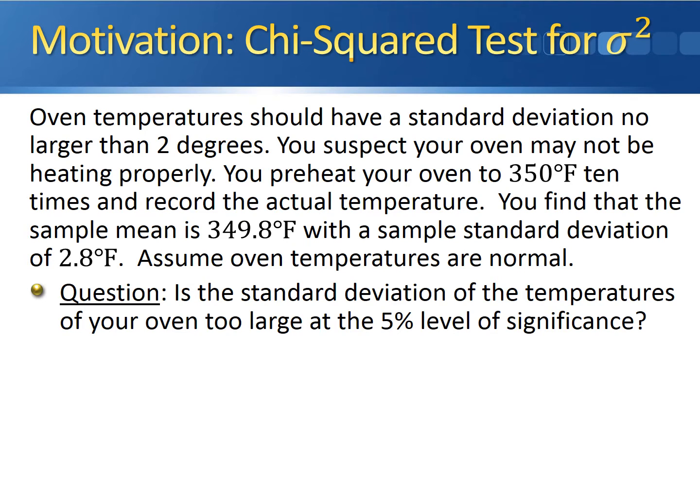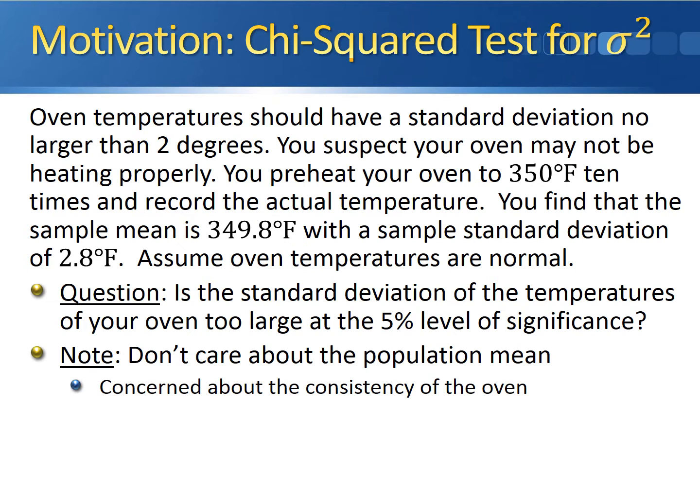Ultimately, we want to know: is the standard deviation of the temperatures of your oven too large at the 5% level of significance? Here's an important note about this problem. We don't actually care about the population mean. We're not concerned if 349.8 differs significantly from 350 degrees. We're concerned about the consistency of the oven. We want to make sure that whenever we heat that oven, the spread or the standard deviation of these oven temperatures isn't differing from 350 degrees by too much. The standard deviation of these temperatures should be no larger than 2 degrees.